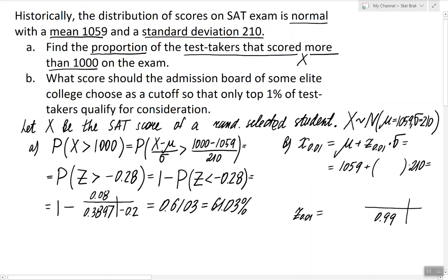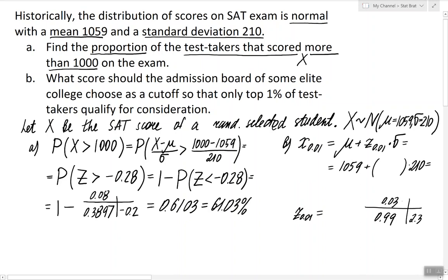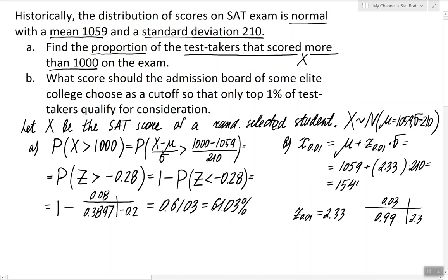The nearest value in the table to 0.99 is 2.99, and reading the margin values gives 2.3 and 0.03. Therefore, z₀.₀₁ = 2.33. Plugging this in: 2.33 × 210 + 1059 = 1548.3. So to answer Part B, the admission board should choose a cutoff of 1548 or 1549, and in that case only the top 1% of test takers will qualify for consideration.